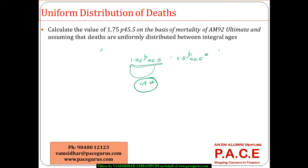So again, I'll take it up to 47: 1p46. By now, he has reached 47 years. So, 47 being alive for another 0.25 years. This whole problem of 1.75p45.5, I can break it into these three parts.